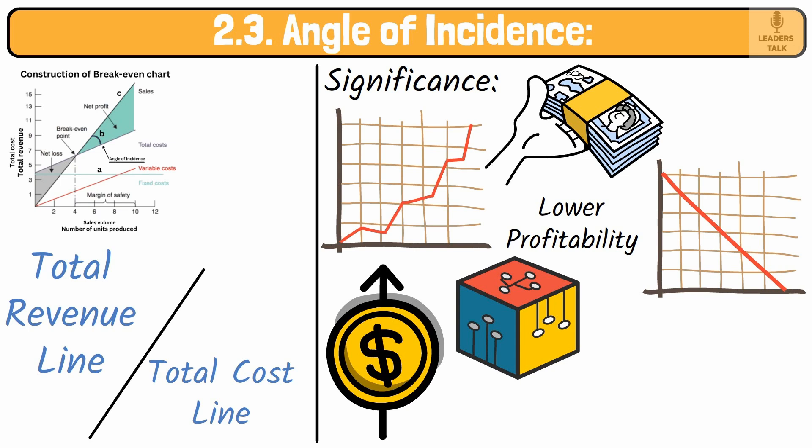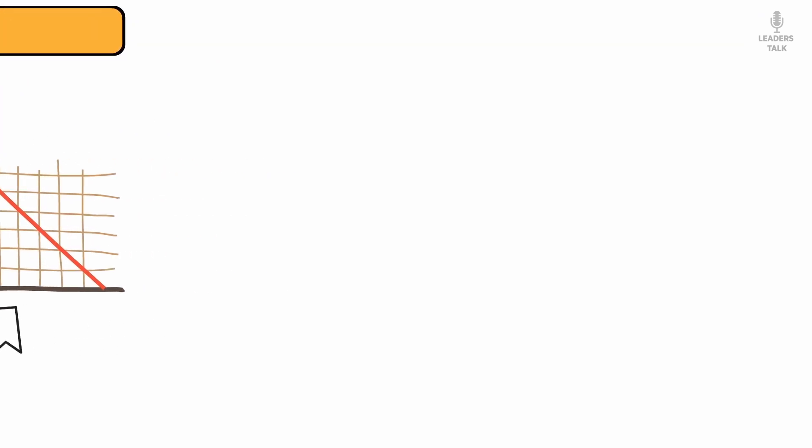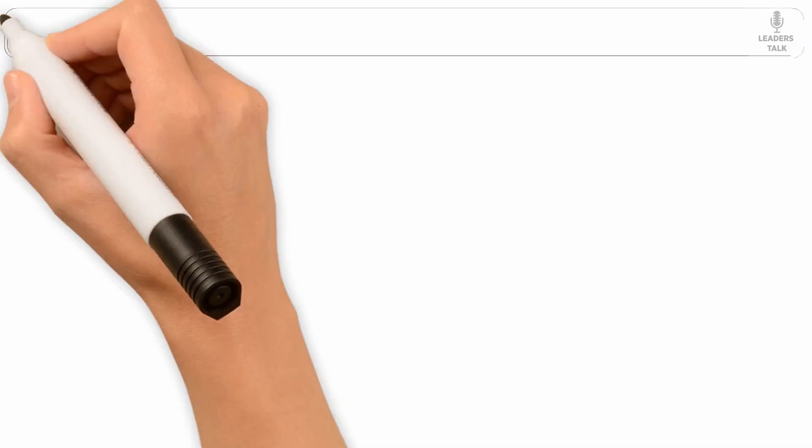In our example, if each additional unit sold contributes significantly to profit, the angle of incidence will be steep. Conversely, if the contribution margin is low, the angle will be less pronounced.